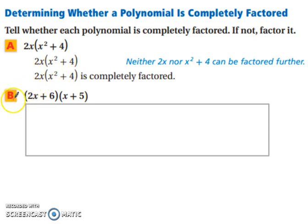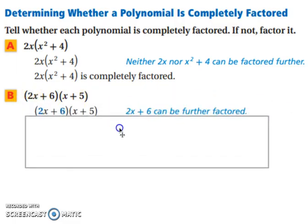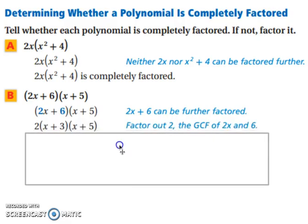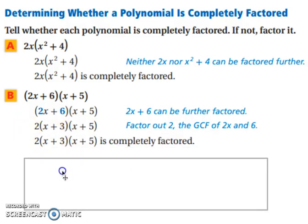Now let's look at example b. We have 2x plus 6, times the quantity x plus 5. If you notice, in this first binomial you can factor out a 2. When you factor out a 2, you end up with x plus 3. There's nothing you can do with the x plus 5, so now it's completely factored.